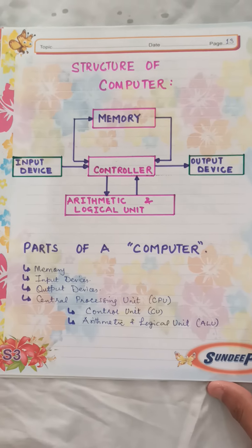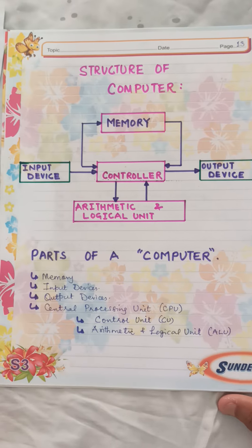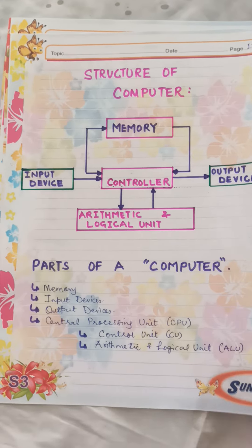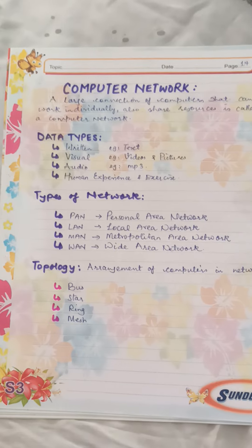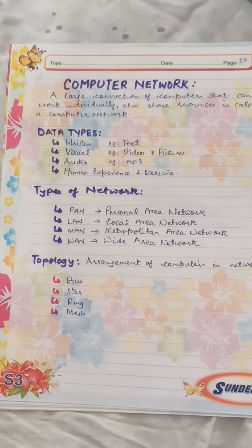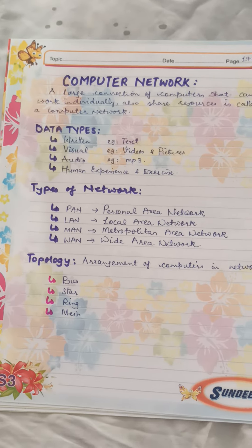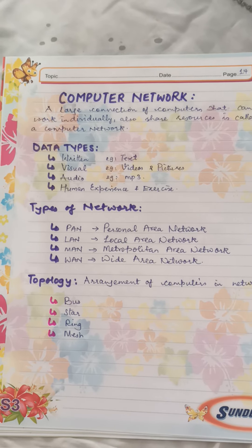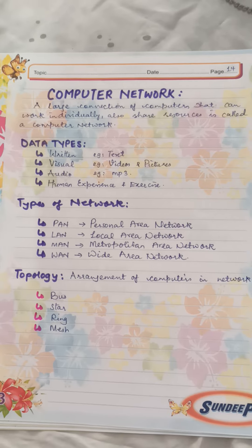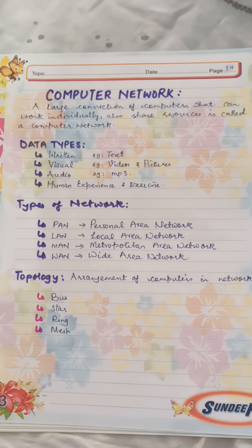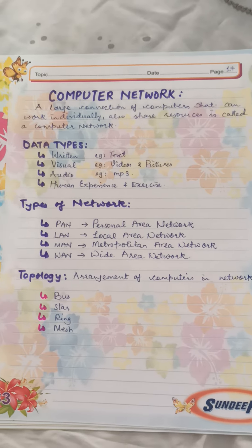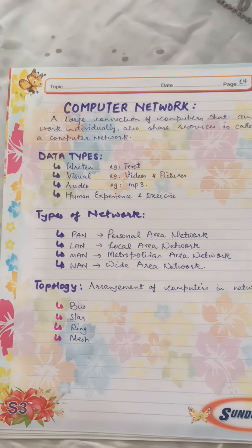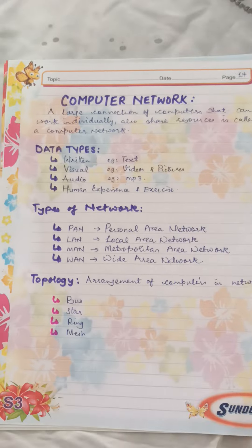This is the structure of a computer: we have the memory, the input, output, and the arithmetic and logical unit which comes in the CPU. Moving on to computer networks — how do computers work together when interconnected using cables or Wi-Fi? What kind of data can be shared: written, visual, audio, and human experience. We have the types of network — the smallest is the PAN, then LAN, MAN, and WAN. Then the arrangement of computers in a network: in a straight line, circular, star, or mixed — that is called the topology.